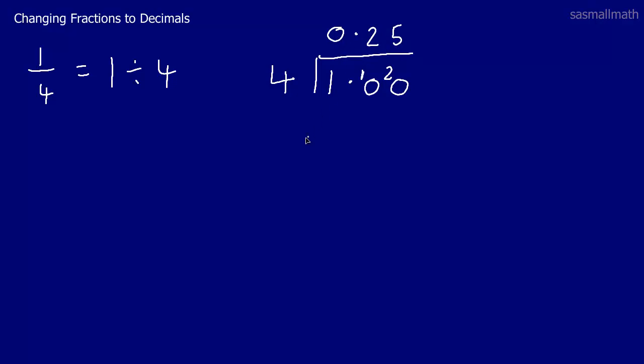So our answer is a quarter is exactly the same as, in a decimal, 0.25. Done.